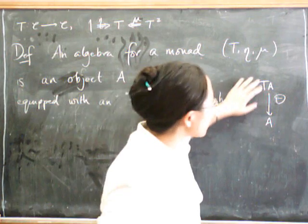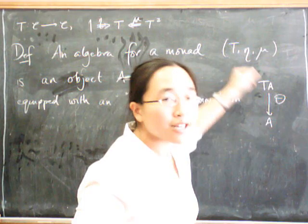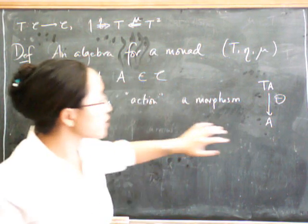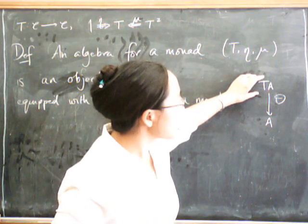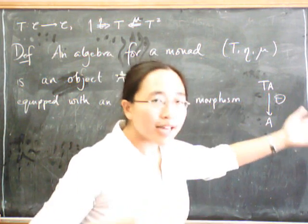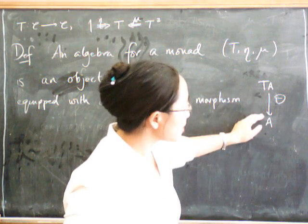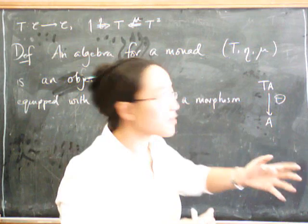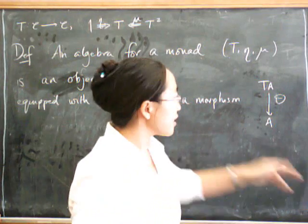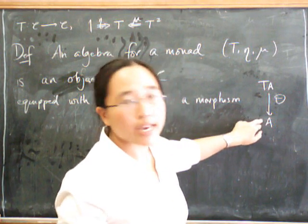The idea is that we have all the operations that in principle we need, and what theta is going to do is actually evaluate those in our underlying object. So in the example of monoids, what we've got here is the free monoids. It says: we've got all these strings of letters in A, and what we've got to have for this evaluation is, for each string of letters, we've actually got to say what's the result of multiplying all those letters together, and that result has to be something in A.